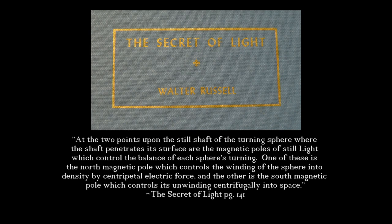This contradiction appears in The Secret of Light. At the two points upon the still shaft of the turning sphere, where the shaft penetrates its surface, are the magnetic poles of still light.